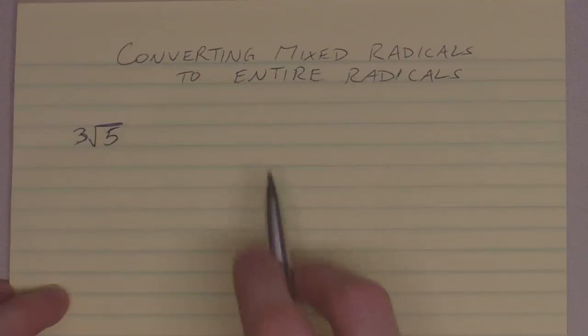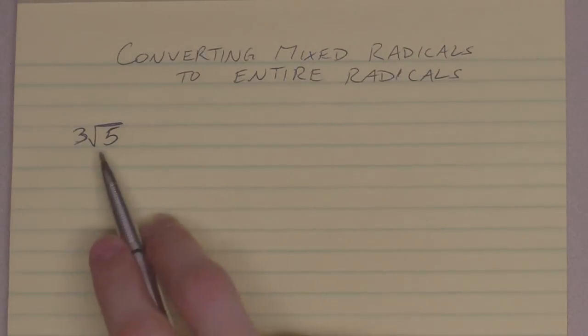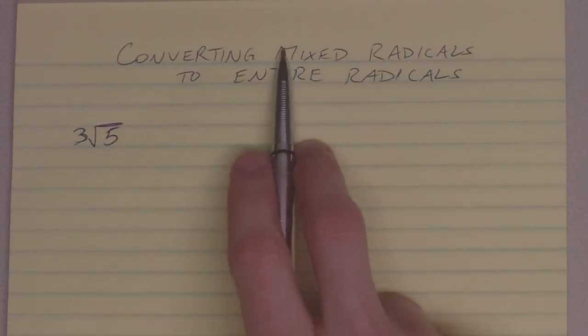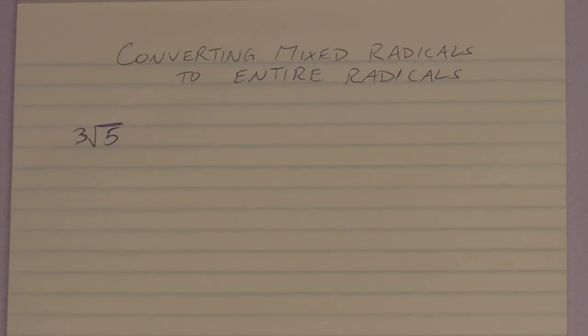Alright, in the last video we looked at how to convert entire radicals into mixed format. Mixed format being 3 root 5, for example, with a coefficient out in front of the radical. This time, we're going to look at how to go from a mixed radical back to an entire.